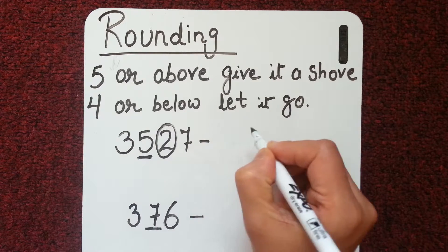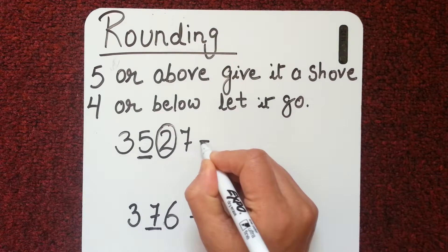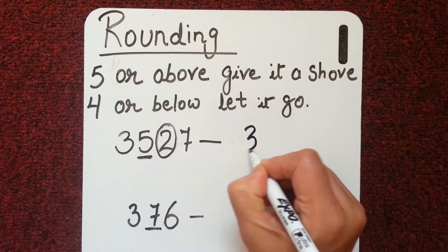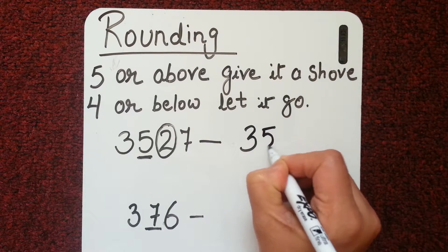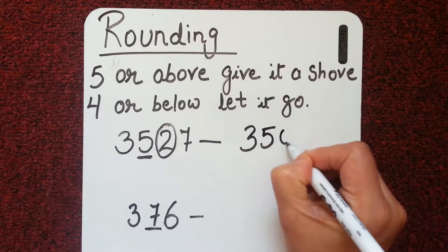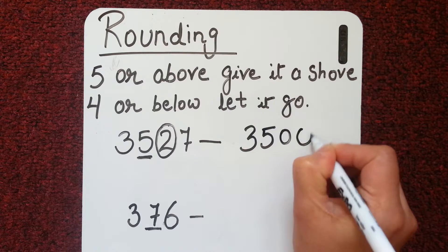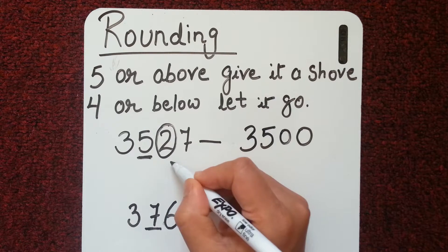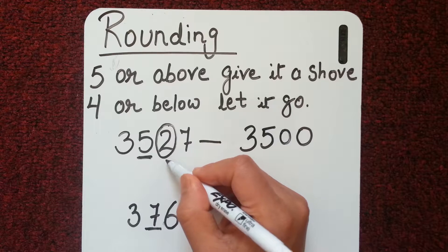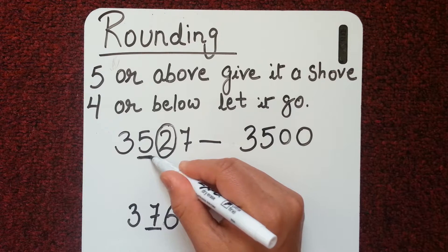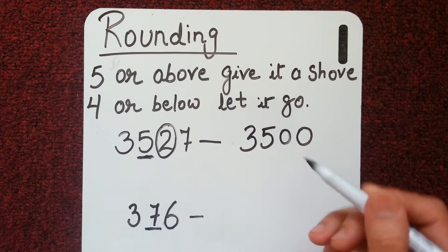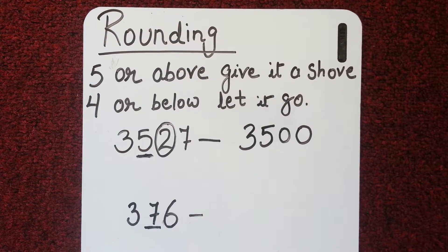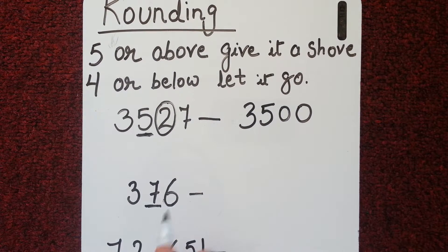So we let it go — we drop the numbers on the right-hand side of the place to which we are rounding. The final result will be three thousand five hundred.